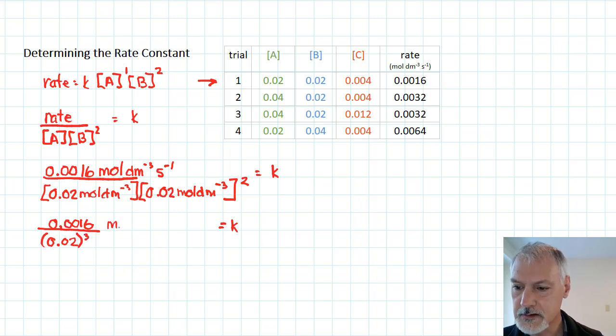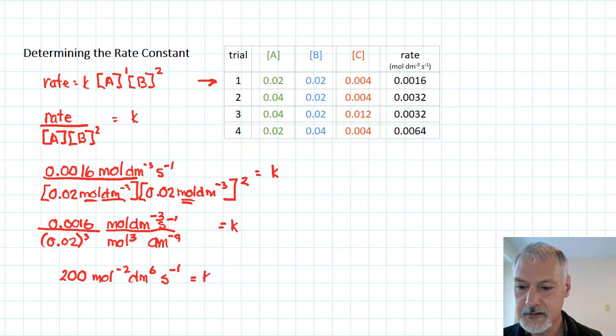And with that, 0.0016 essentially divided by 0.02 cubed. And now the unit part. So let's look at simplifying that, and on the bottom, I'm going to have mole and mole squared, so that'll be mole to the third. Similarly, decimeters to the minus 3 and decimeters to the minus 3 squared gives me decimeters to the minus 9 on the bottom. Solving for the math, putting that in, you'll get around 200. The units, that's moles to the 1 minus 3, so that'll be moles to the minus 2. Minus 3 minus minus 9 gives me decimeters to the sixth seconds to the minus 1, and that's what the constant is.